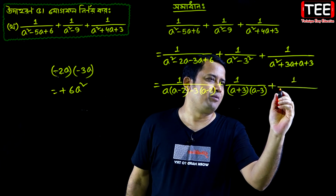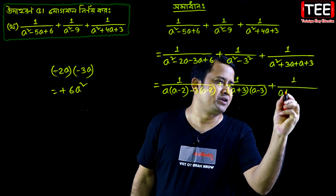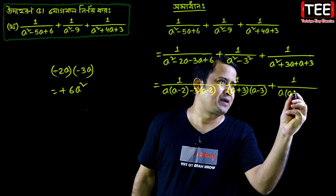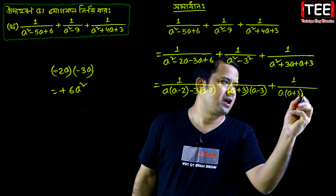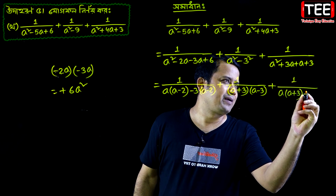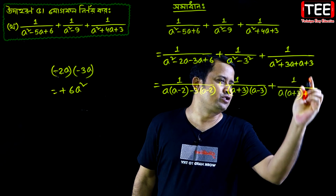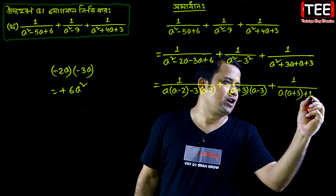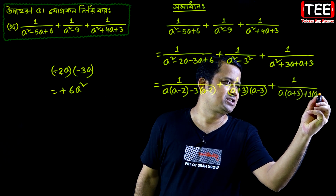I am going to take a common, then I will have a plus 3, and plus 1, then I will have a plus 3.